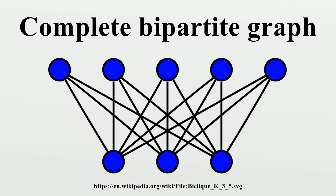Given a bipartite graph, testing whether it contains a complete bipartite subgraph K(i,i) for a parameter i is an NP-complete problem. A planar graph cannot contain K3,3 as a minor; an outer-planar graph cannot contain K3,2 as a minor. Conversely, every non-planar graph contains either K3,3 or the complete graph K5 as a minor — this is Wagner's theorem.